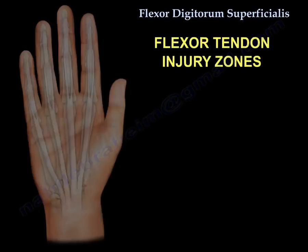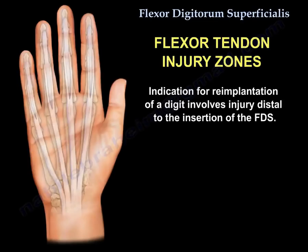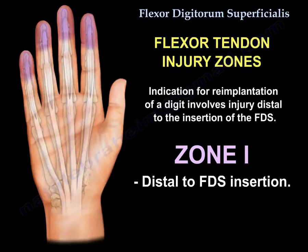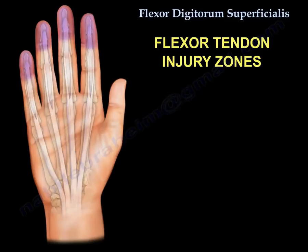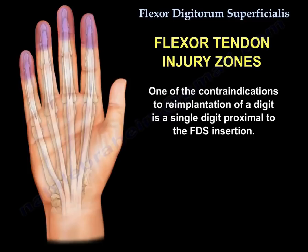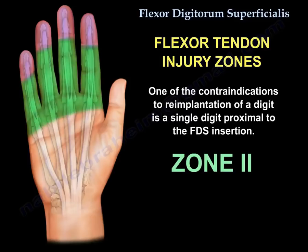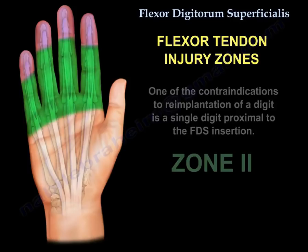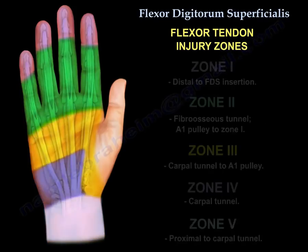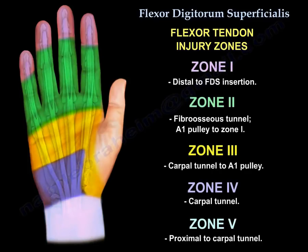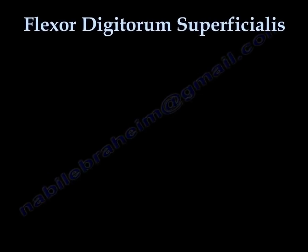The indication for re-implantation of a digit involves injury distal to the insertion of the flexor digitorum superficialis — that is Zone 1. One of the contraindications to re-implantation is a single digit proximal to the flexor digitorum superficialis insertion — Zone 2. You can see in this diagram the different flexor tendon injury zones. Thank you very much, I hope that was helpful.